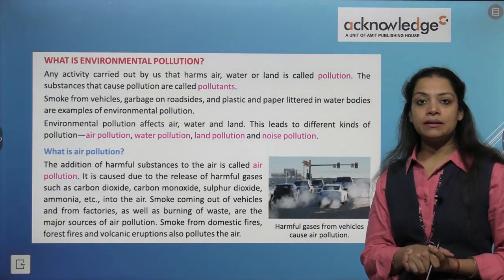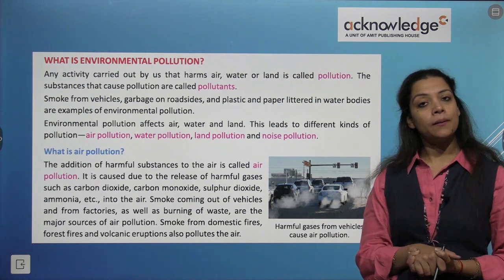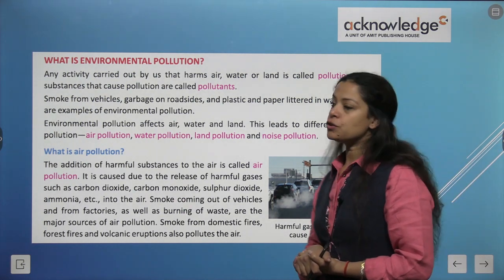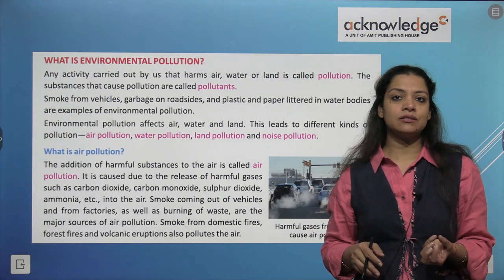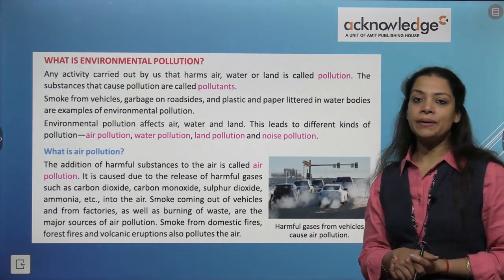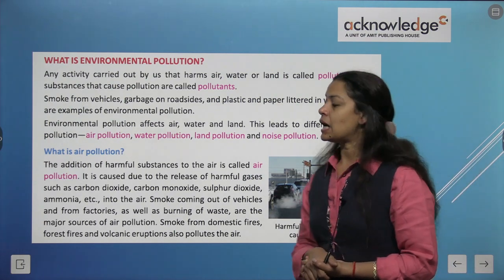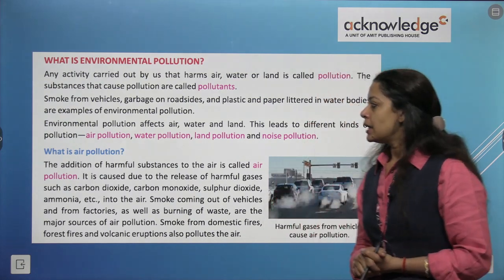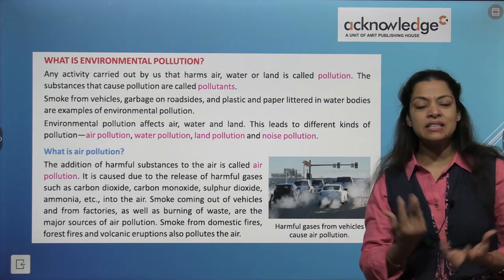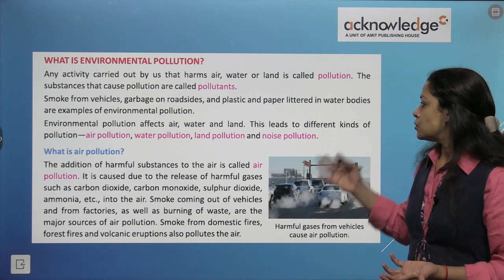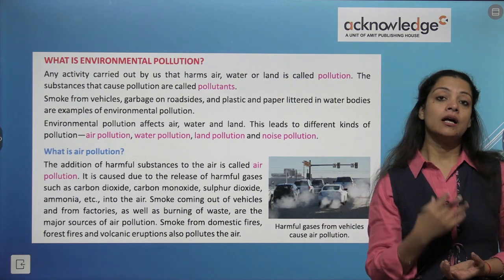So what is environmental pollution? Any activity carried out that harms air, water or land is called pollution. The substances that cause pollution are called pollutants. Smoke from vehicles, garbage on roadsides, and plastic and paper littered in water bodies are examples of environmental pollution. Environmental pollution affects air, water and land, leading to different kinds of pollution: air pollution, water pollution, land pollution and noise pollution.